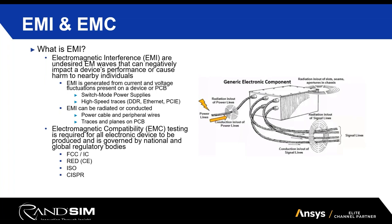EMI stands for electromagnetic interference — the undesired electromagnetic waves that can negatively impact a device's performance or cause harm to nearby individuals. Whenever you release a device to market, you'll have to test to a relevant EMC standard. Common ones include FCC, RED, CISPR, and ISO standards, depending on your industry. Some of the different tests include conducted and radiated emissions, or conducted and radiated susceptibility.